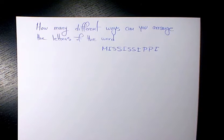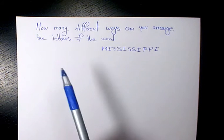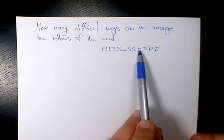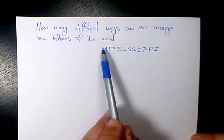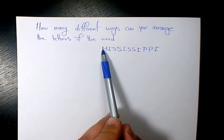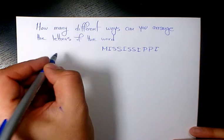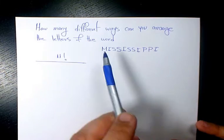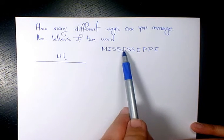So the first thing I need to do is count how many letters we have in Mississippi: one, two, three, four, five, six, seven, eight, nine, ten, eleven different letters. So that's going to be eleven factorial. And let's see which one is repeating. As you see here we have four I's, we have four S's, and we have two P's, and just one M.